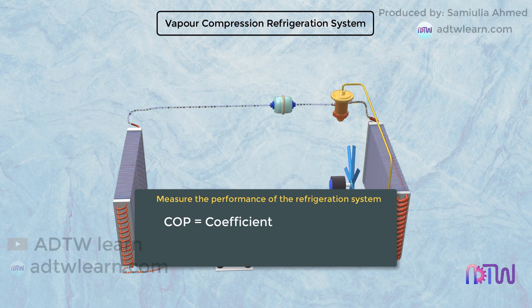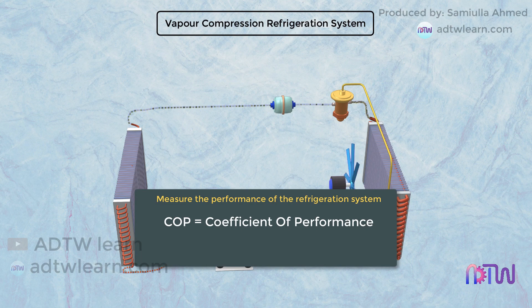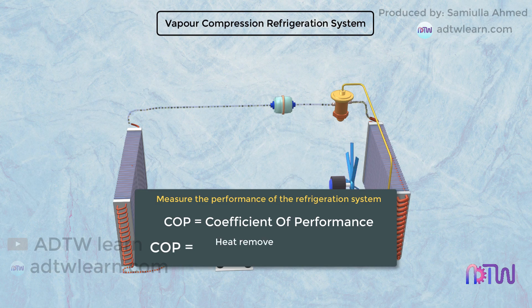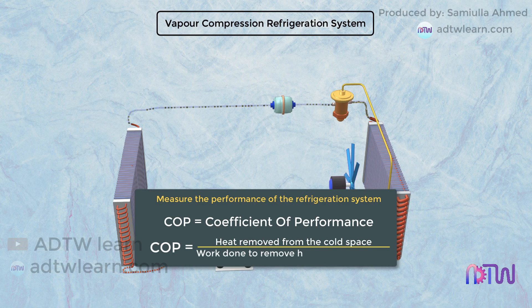To measure the performance of the refrigeration system, we use COP, which means coefficient of performance. The coefficient of performance is defined as the heat removed from the cold space divided by the work done to remove the heat from that space.